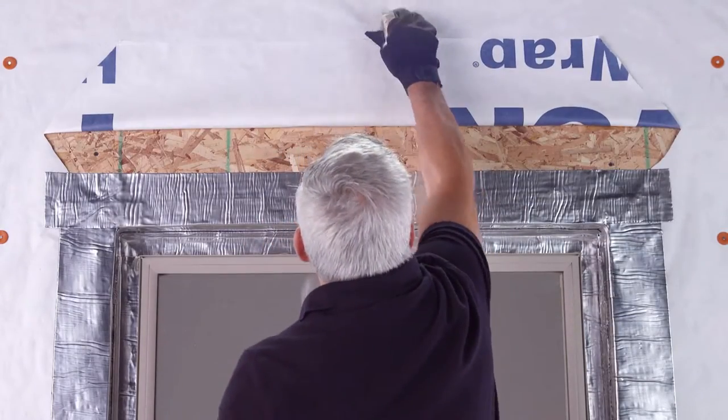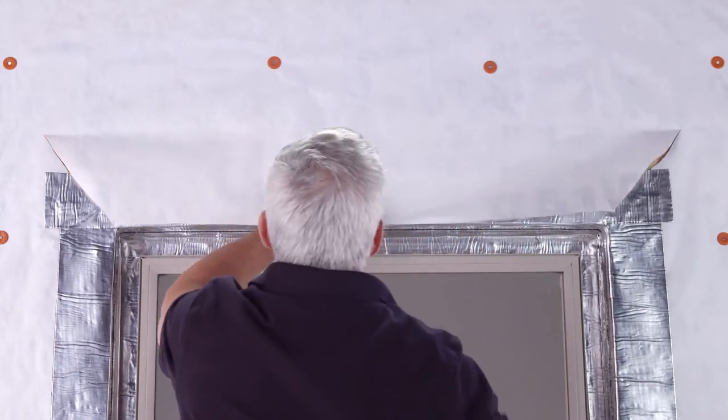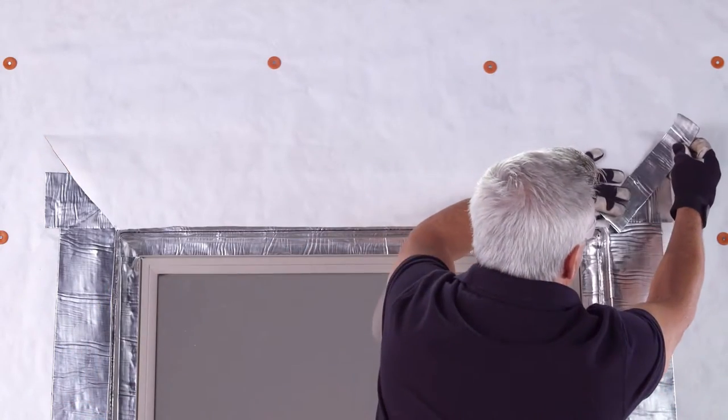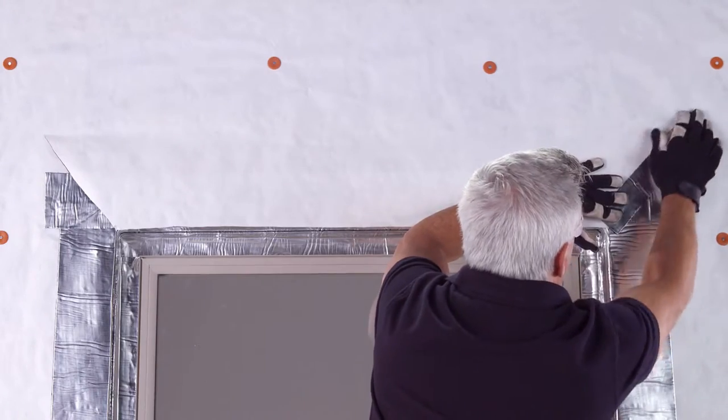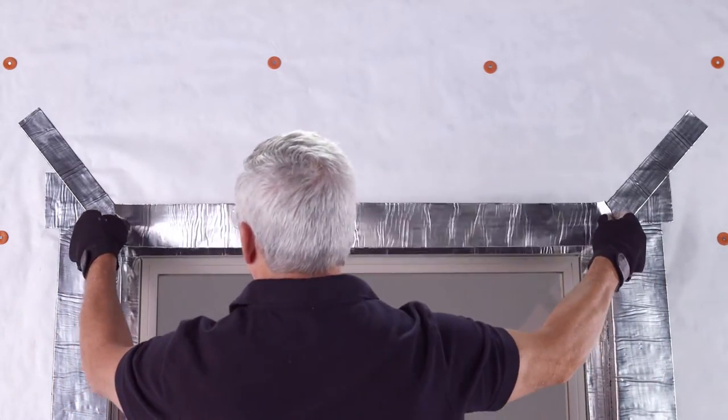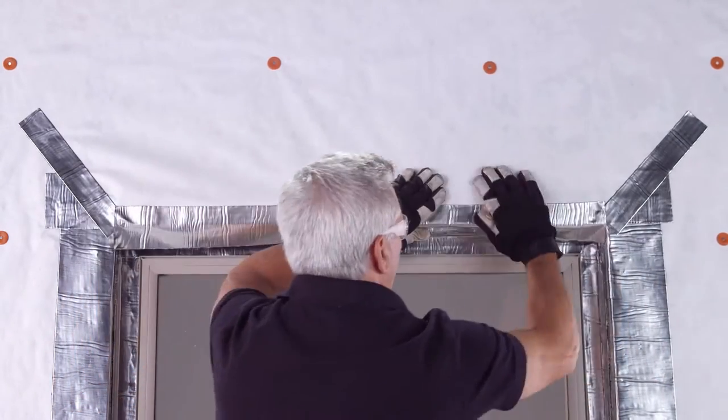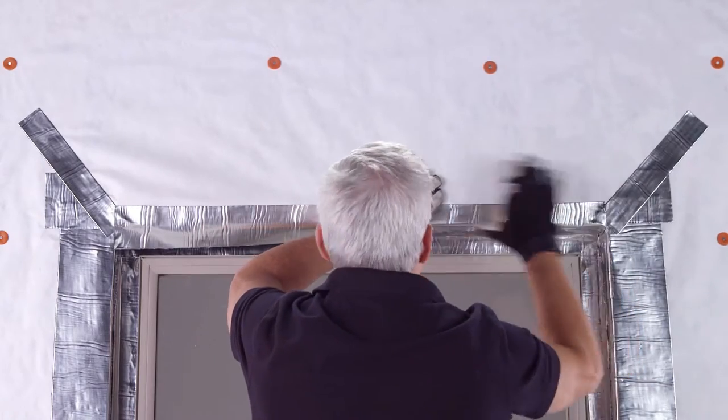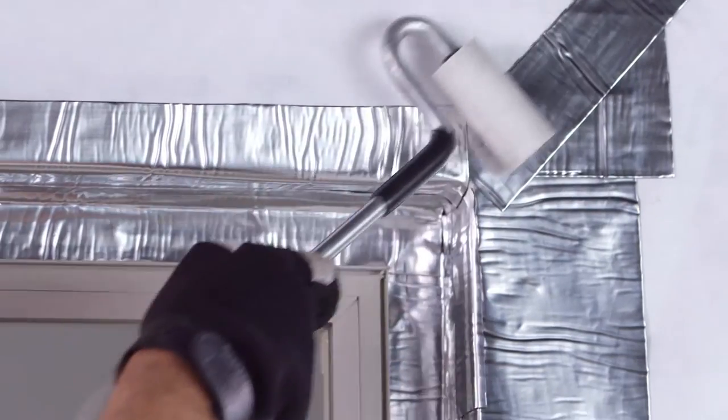Now remove the temporary tape holding the top flap of the WRB. Tape both 45-degree corners and head jam with flashing tape or a weather-resistant barrier joint tape. Use the J-Roller to remove any air pockets.